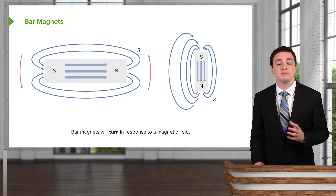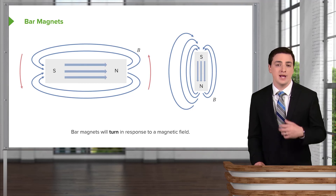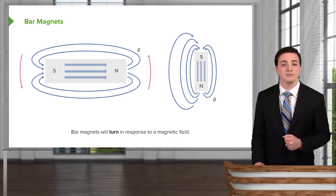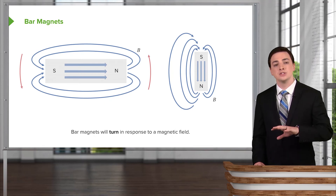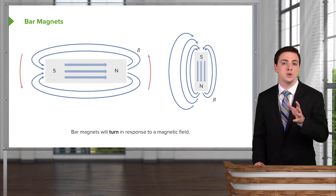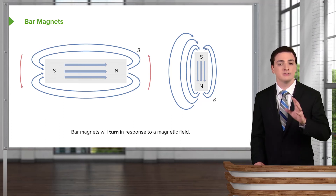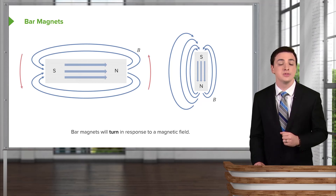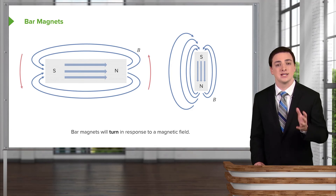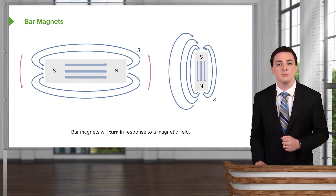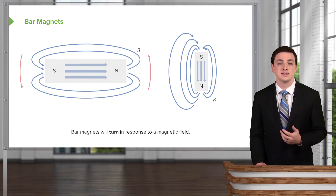It's also important to know how a bar magnet or any magnetic object behaves in the presence of other magnetic fields. What it will always do is try to twist to orient itself with the magnetic field that is present, twisting itself in response to the magnetic field to try to align north to south and south to north, in order to make the magnetic field lines all be pointing in the same direction.